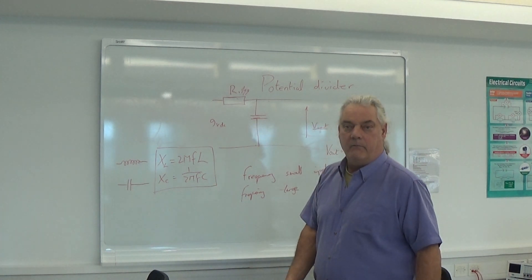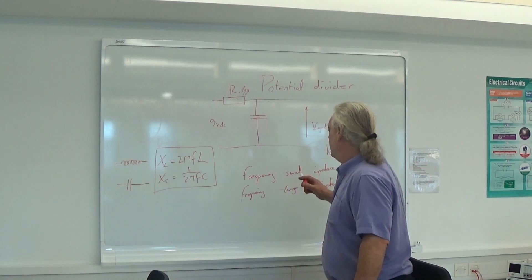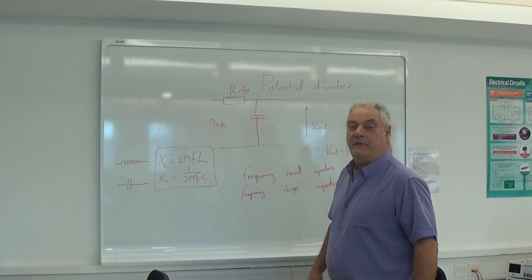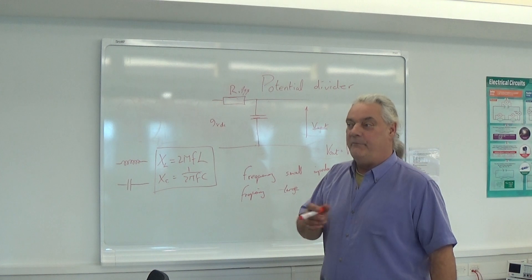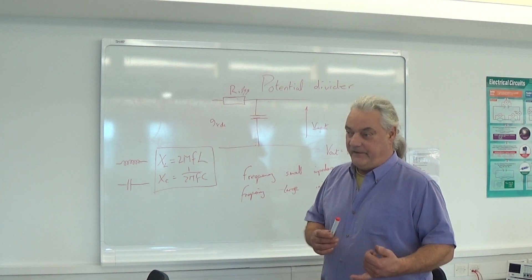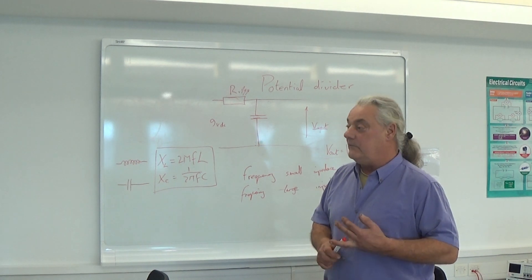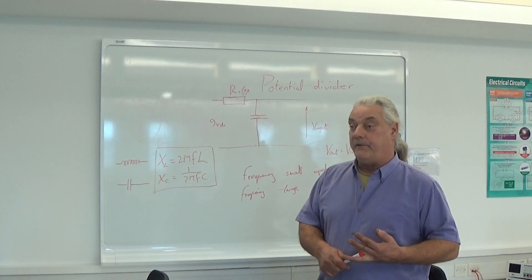So if I summarize that information, which is what science is all about, by summarizing things, if I put high frequency through that, it lets it through. If I put low frequency through it, it blocks it. It lets through high frequency, and it interferes or interrupts low frequency.